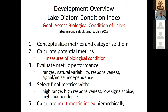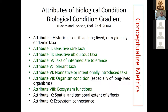To develop this index of biological condition, we followed several steps. First, conceptualize what you want to measure for biological condition. Second, calculate all potential metrics. Third, evaluate performance based on characteristics including: high range, high responsiveness to human disturbance, low signal-to-noise ratio — measuring temporal variability — and high independence among metrics, so we're not weighting the multi-metric index in one direction due to correlations between metrics.